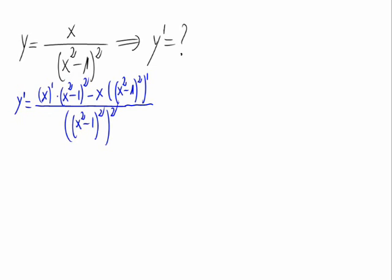On the numerator, we would have the derivative of x, which is 1, times x squared minus 1 squared, minus x times this derivative.